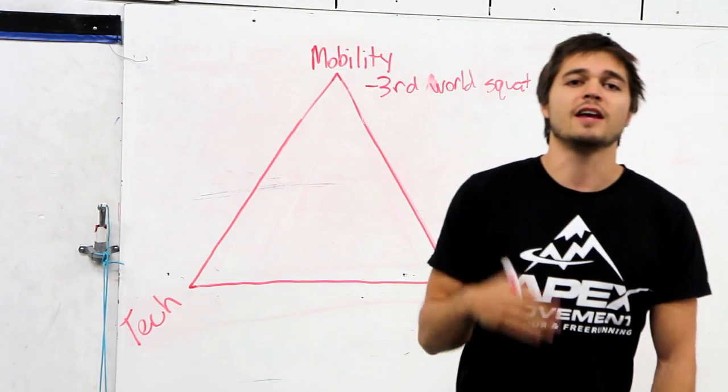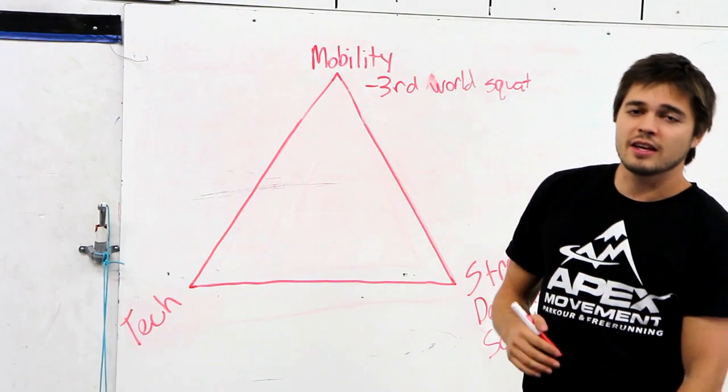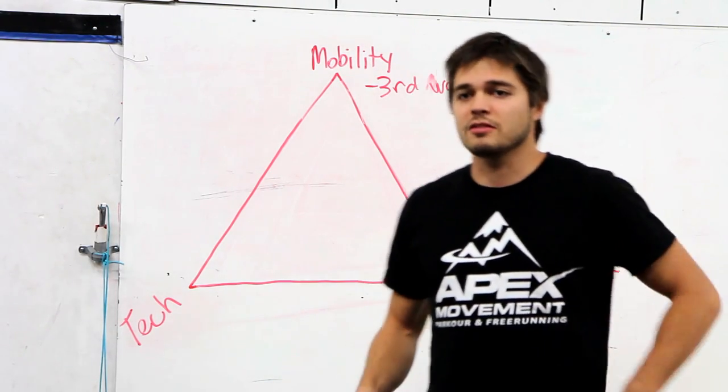Now the ultimate parkour test of this is to move your feet from hip width to feet together, knees together. And if you can still stay flat footed in a full squat, then you've got really great ankle achilles, hip mobility, and also in your back.